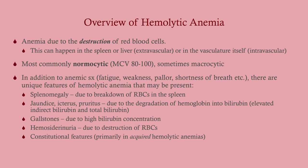Hemolytic anemia is anemia due to the destruction of red blood cells, which will spill everything out into the bloodstream. This can happen in the spleen or liver — extravascular hemolysis — or in the vasculature itself — intravascular hemolysis. Most commonly it's going to be normocytic, but it can be macrocytic or even microcytic if you are hemolyzing and losing iron, making your red blood cells iron-deficient.